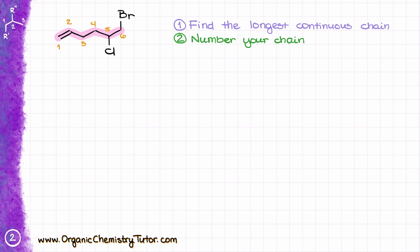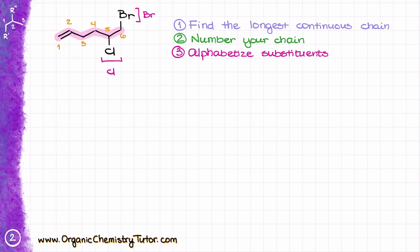If I were to number it from the other side, yes, my bromine and chlorine would get lower numbers, but that would give a much higher number to my double bond, which would be a violation of IUPAC rules. Next, like for any other name, we would have to alphabetize our substituents. I have chlorine starting with C, and bromine starting with B, so I put bromine before chlorine. That means my name starts with 6-bromo.